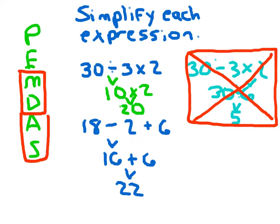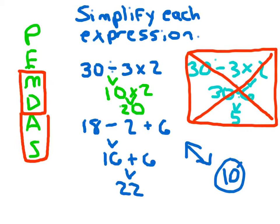If someone looked at this and said 2 plus 6 is 8, then 18 minus 8 is 10, they would not have been following the order of operations and would have gotten the wrong value. This expression does not evaluate to 10. We have to follow the order of operations.